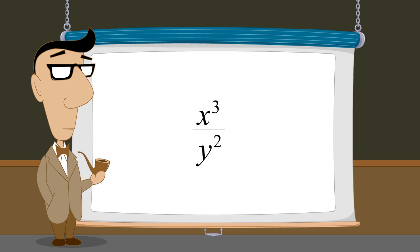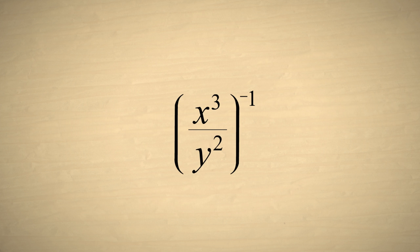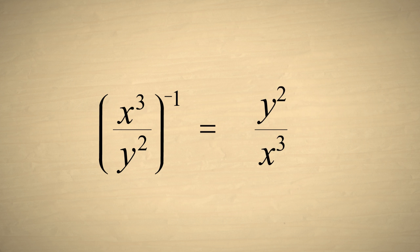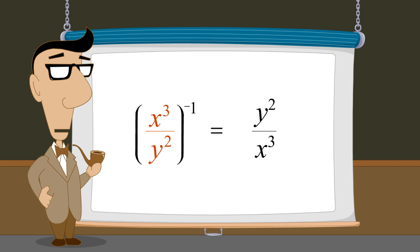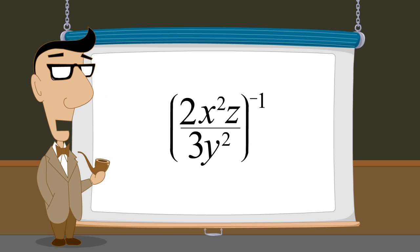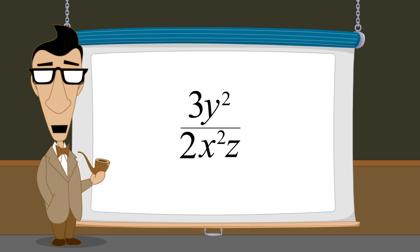Now let's see what happens if we take this result and raise it to the negative first power. Multiplying each exponent in the expression by negative one, we get x to the negative three over y to the negative two. Moving each term to the opposite side of the fraction and changing the sign of the exponents, we get y squared over x cubed. So raising this fractional expression to the negative first power simply flipped it upside down to create its reciprocal. In fact, raising any fractional expression to the negative first power flips it upside down, creating its reciprocal.